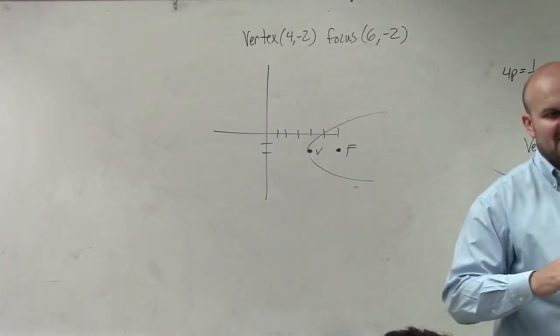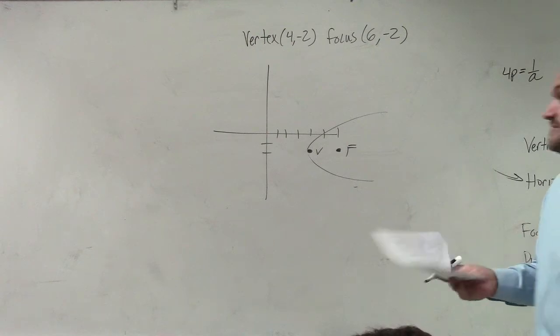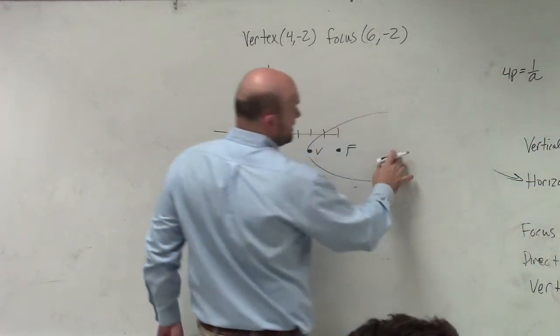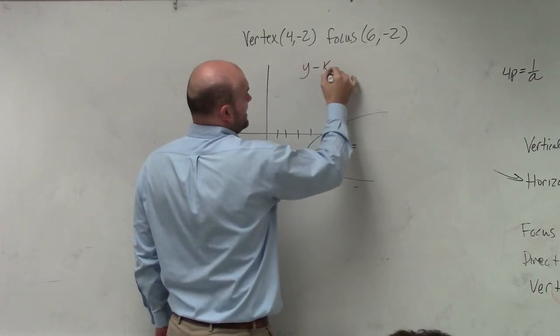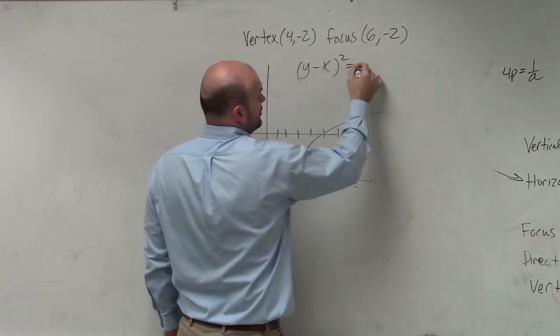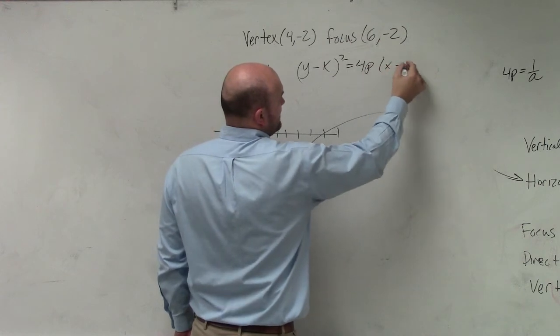So you don't need to sketch the graph, but that gives me a good understanding of saying, okay, now I know I need to use my horizontal formula: y minus k squared equals 4p times x minus h.